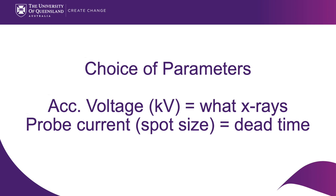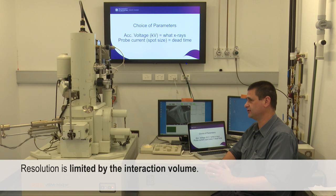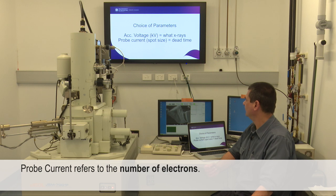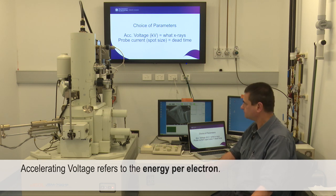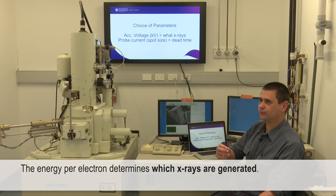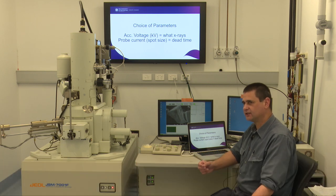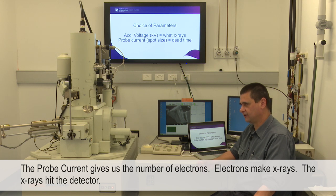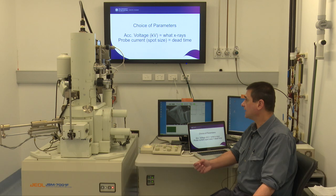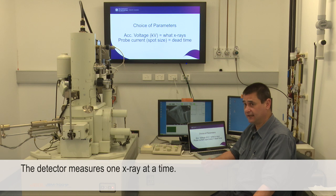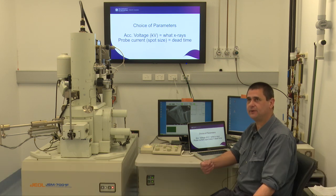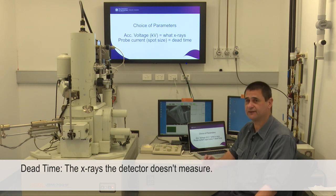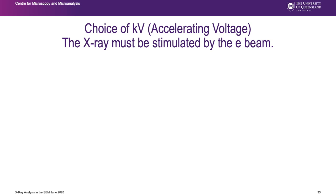The two very important parameters are the accelerating voltage and the probe current - often called the spot size. We're not so worried about resolution since we're limited by the interaction volume. The energy per electron tells us which X-rays we can generate - we can't generate X-rays above the electron's energy. The probe current gives us the number of electrons. The detector can only deal with a certain number of X-rays - it likes to measure one at a time - and if given too many it struggles. This is referred to as dead time.